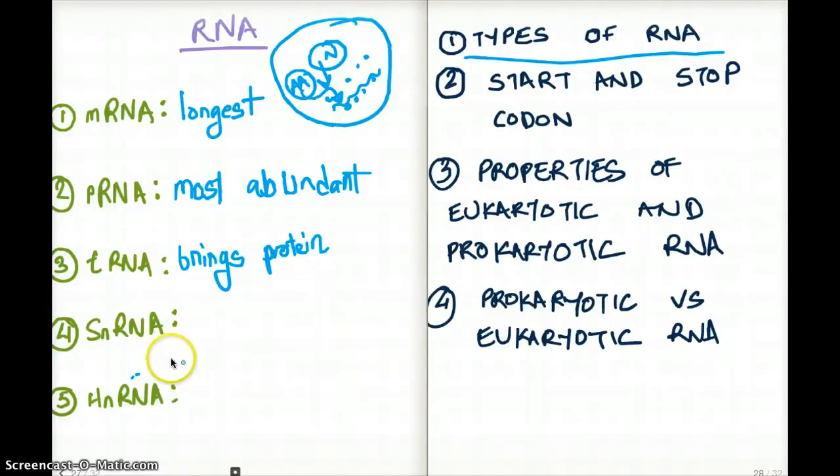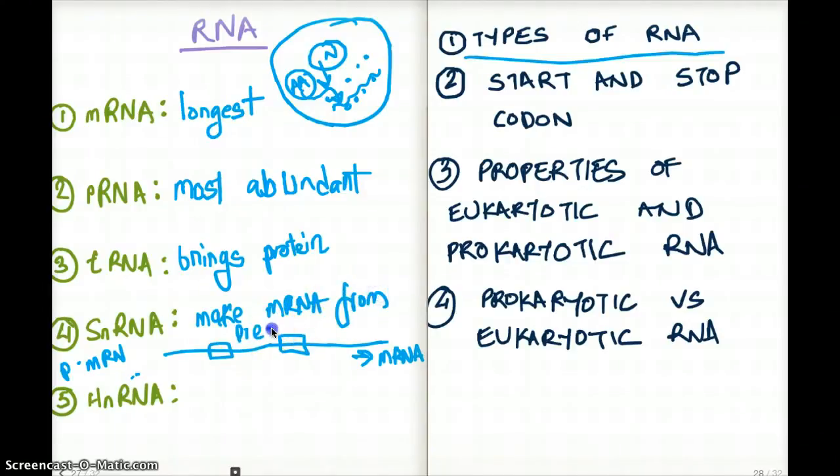So imagine that this is our RNA. It has introns in between. And when we have introns in between, we're calling it pre-mRNA. From pre-mRNA to mRNA, which are ready to go to the cytoplasm, is achieved by the snRNA. So they make mRNA from pre-mRNA.